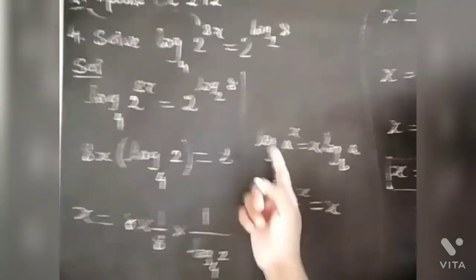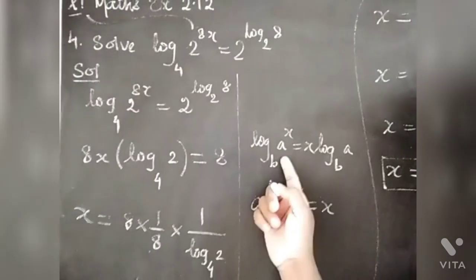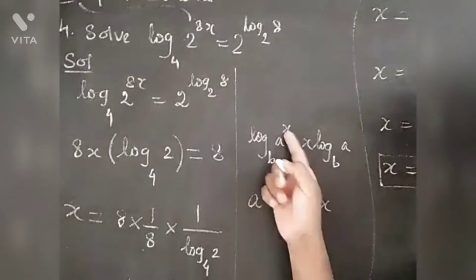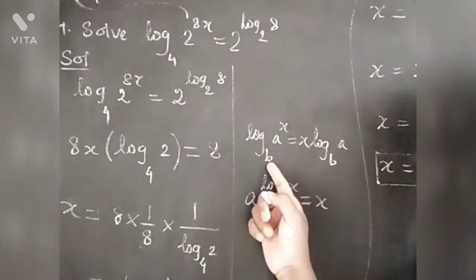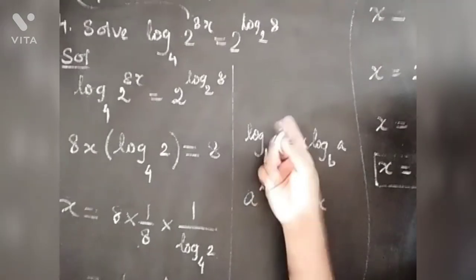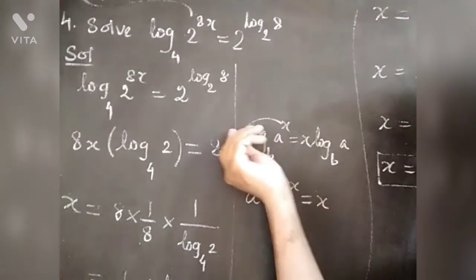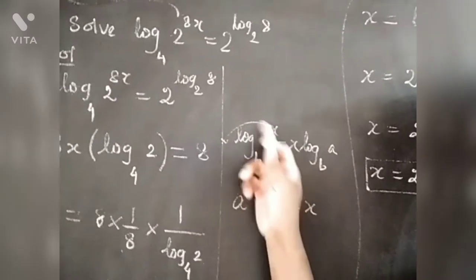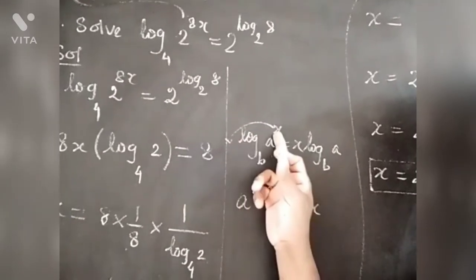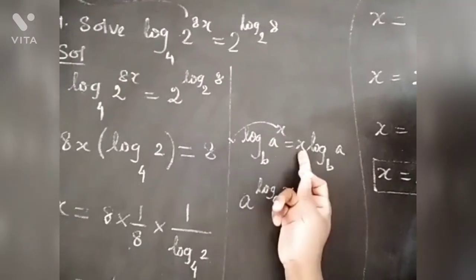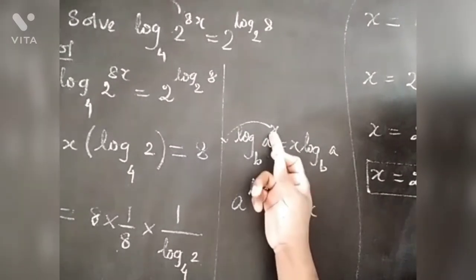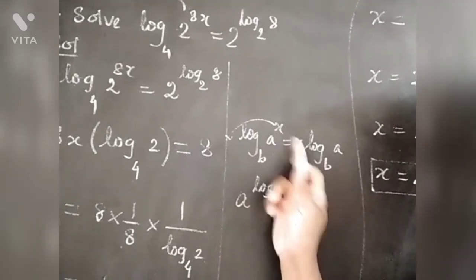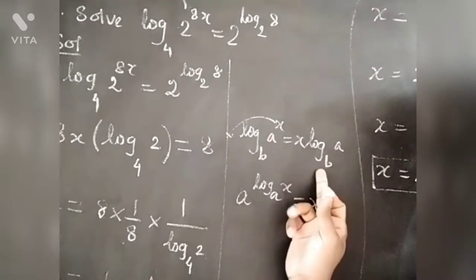Let's take a look at what rule — the power rule. Log of a to the power x, base b. Let's take a look at that power: log of a power is a product. Power becomes a product. If you have a power, it's a product. So the power rule says it becomes x into log a base b.